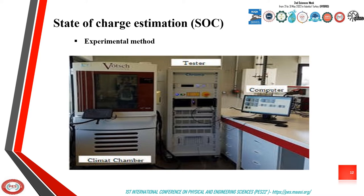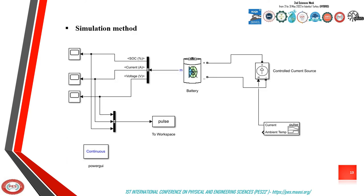To estimate the state of charge by an artificial intelligence-based method, the data must be collected by adopting an experimental method. A climate chamber is then necessary to condition the battery temperature and a battery tester to perform the charge and discharge protocol. During the test, thermal and electrical variables such as cell temperature, current, and voltage must be measured. We turn to a simulation method using MATLAB Simulink software, which is able to simulate the charging and discharging scheme of the battery at different temperatures and power, and thus collect the electrical and thermal data.